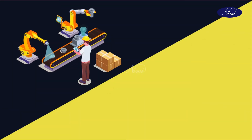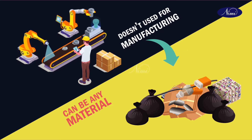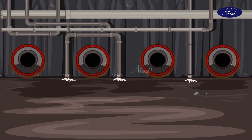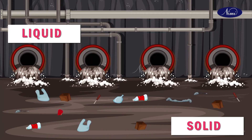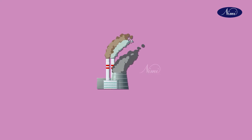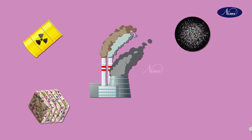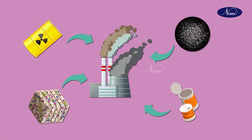Industrial waste is waste produced by industries — any material that isn't useful for the industrial manufacturing process. It contains solid as well as liquid waste, formed by the processing of various materials, and contains harmful chemicals and solid metal waste. Examples include chemicals, pigments, ashes, and metals.